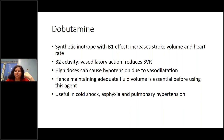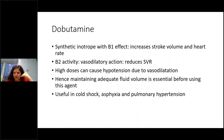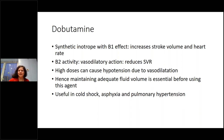With dobutamine, sometimes giving 10 mls per kilo before starting it helps, as adequate fluid volume improves its effect. Preterm infants are usually normovolaemic, making dobutamine a good agent for increasing stroke volume. It is very useful in cold shock, term asphyxia, and pulmonary hypertension because it causes pulmonary vasodilatation.